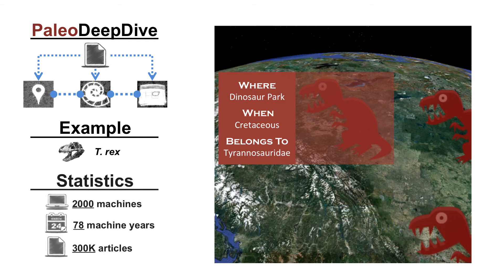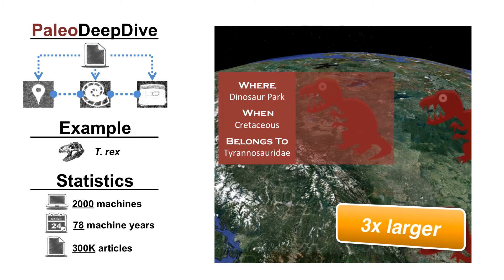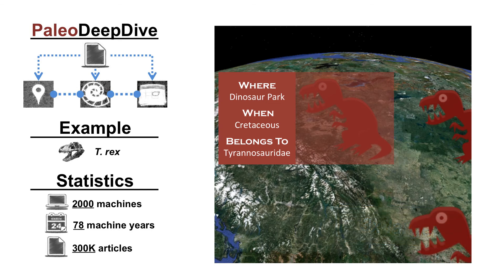Although Paleo Deep Dive is still in an early stage, we already have some exciting progress. Currently, Paleo Deep Dive has read more than 300,000 journal articles, resulting in a database that contains three times as many groups of organisms or taxa as PaleoDB.